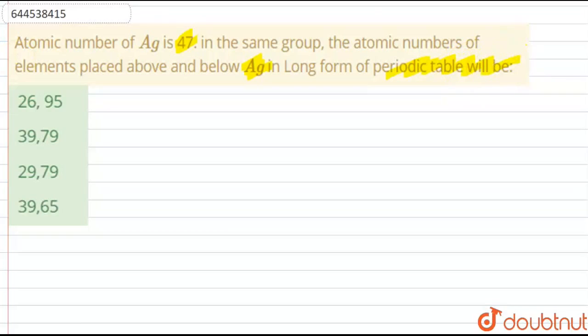In this question, what we have to do is, we are given the atomic number of silver that is 47. And we have to find out the atomic numbers of elements that are placed above and below silver in this long periodic table.